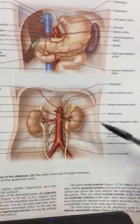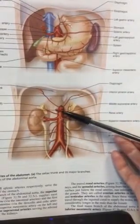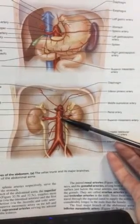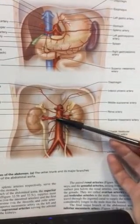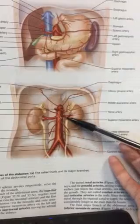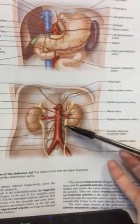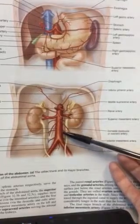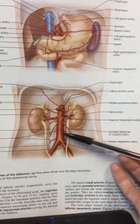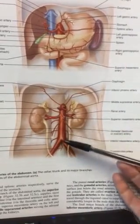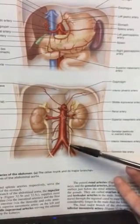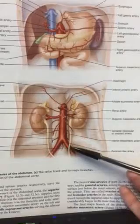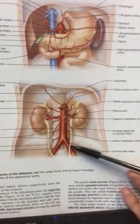So again from top down, we have the celiac trunk, the superior mesenteric artery, the right and left renal arteries, the right and left gonadal arteries, and the inferior mesenteric artery. The abdominal aorta will then branch at the level of the pelvis into the right and left common iliac arteries.